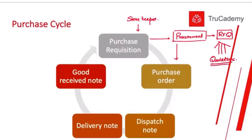After we send the purchase order, the supplier starts processing, gets the goods ready, and dispatches them. When the supplier dispatches the goods, they sometimes also send a dispatch note. The purpose of the dispatch note is to inform the customer of the dispatch and the expected date of receipt — maybe after 10, 15, or 20 days depending on the distance. So after the dispatch note, we know on which date to expect delivery.